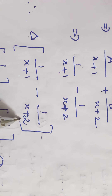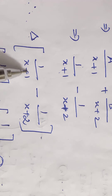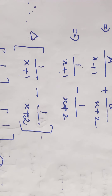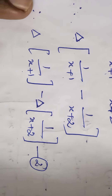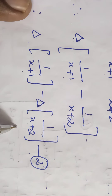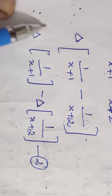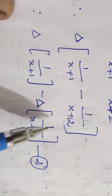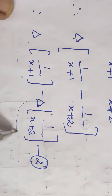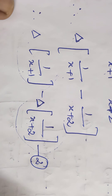Applying the delta operator to both sides, we get: delta of 1 divided by (x+1)(x+2) equals delta of 1 divided by (x+1) minus delta of 1 divided by (x+2), which is equation number 2. We compute each term separately and then subtract to get the final answer.